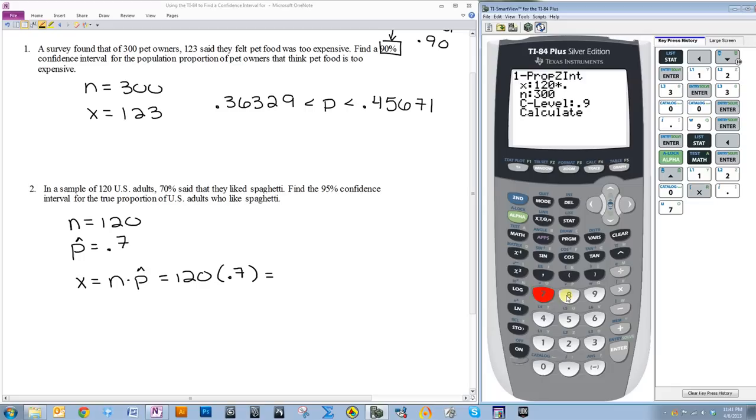Notice if you do 120 times 0.7, and then press enter, it will automatically tell you 84. So, you don't even have to calculate it separately.